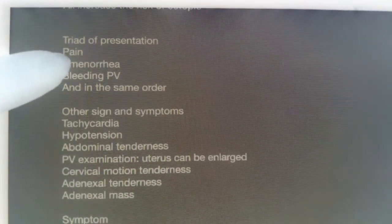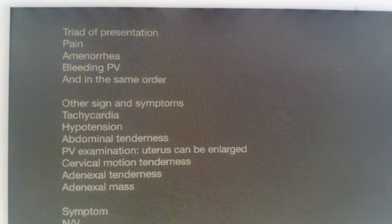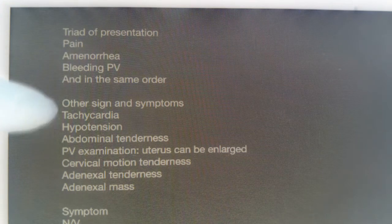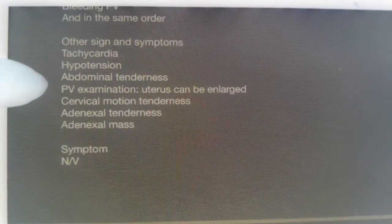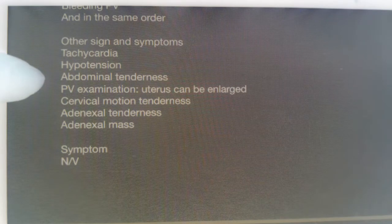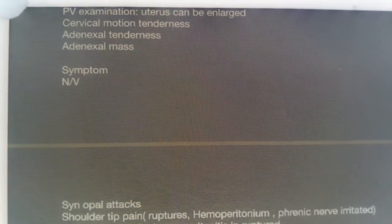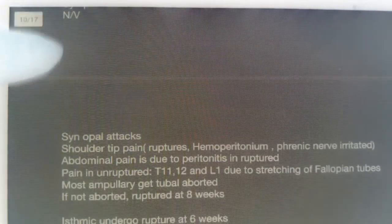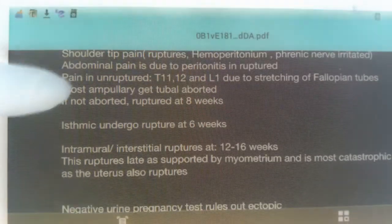Clinically, ectopic pregnancy presents with a triad: pain, amenorrhea, and per vaginal bleeding — in that order. On examination you will see tachycardia, hypotension, and abdominal tenderness. On per vaginal examination: cervical motion tenderness, adnexal tenderness, adnexal mass, and the uterus is enlarged but not as much as in a normal pregnancy.